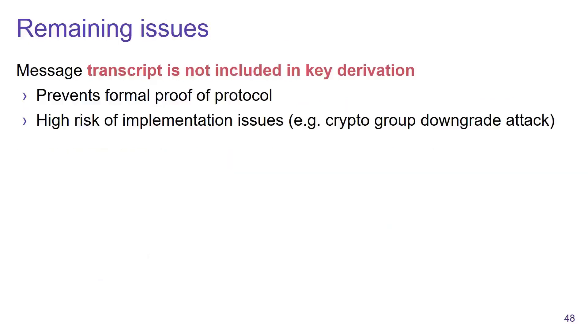There are still some remaining issues in this update to the draft IEEE standard. Namely, the message transcript is not included in the key derivation. This prevents a formal proof of the protocol and increases the risk of implementation issues where a programmer may forget to defend against downgrade attacks.